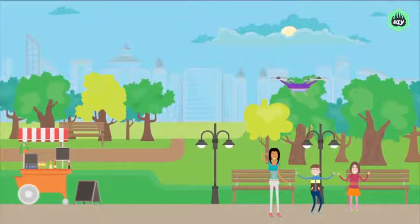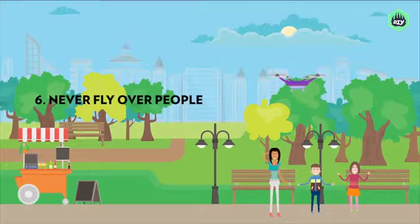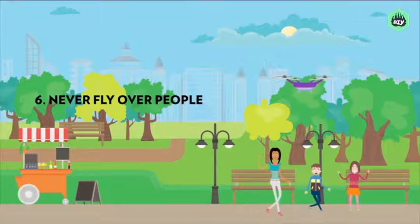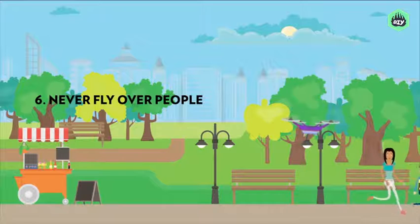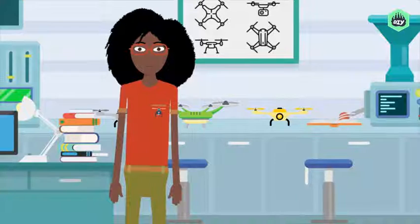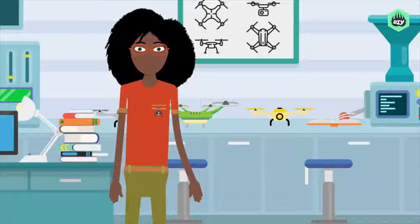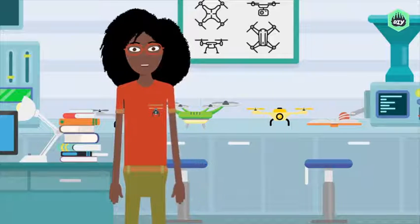Along with keeping rogue drones under control, make sure you're never flying over people. Yourself and your spotter are fine, but what happens if you lose control when you're flying over the top of someone you don't know? Never fly in a way that puts anyone or anything in danger.